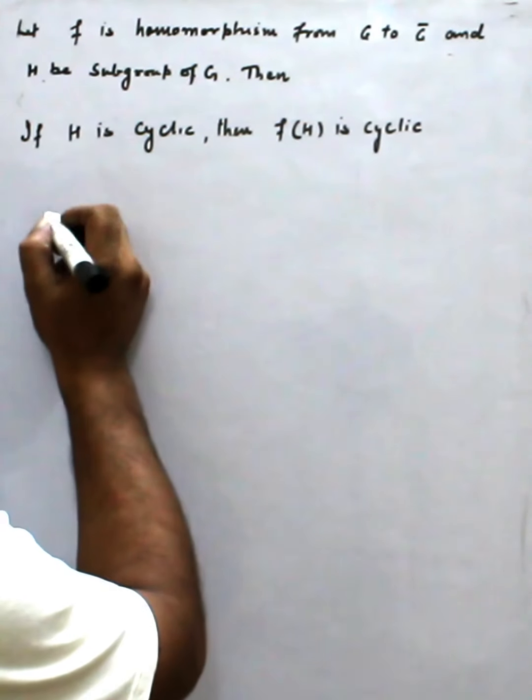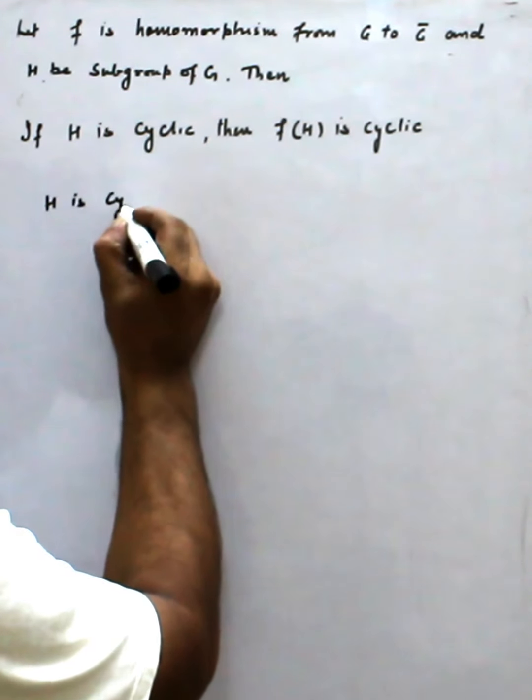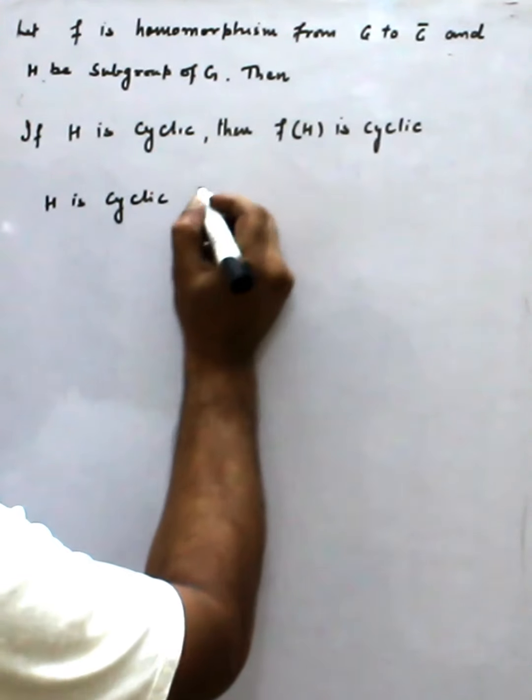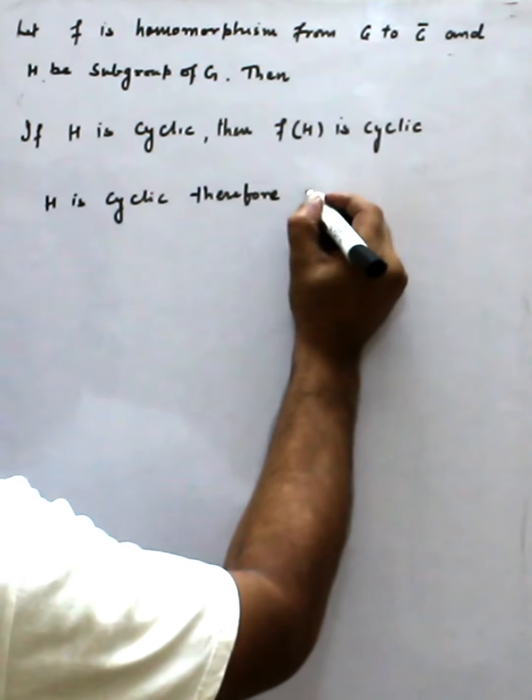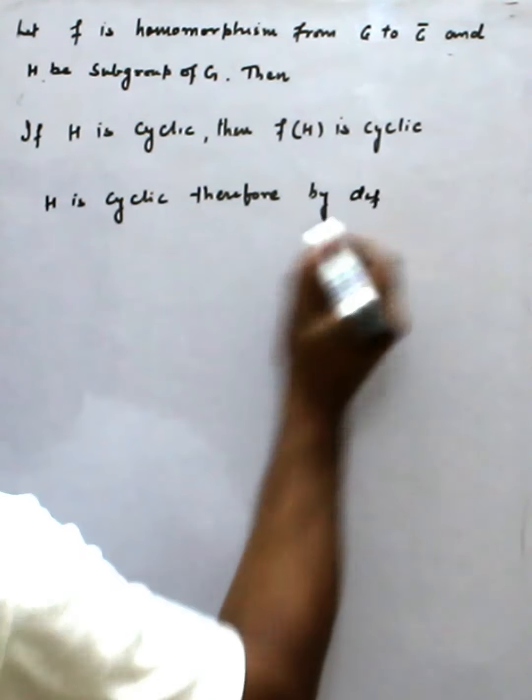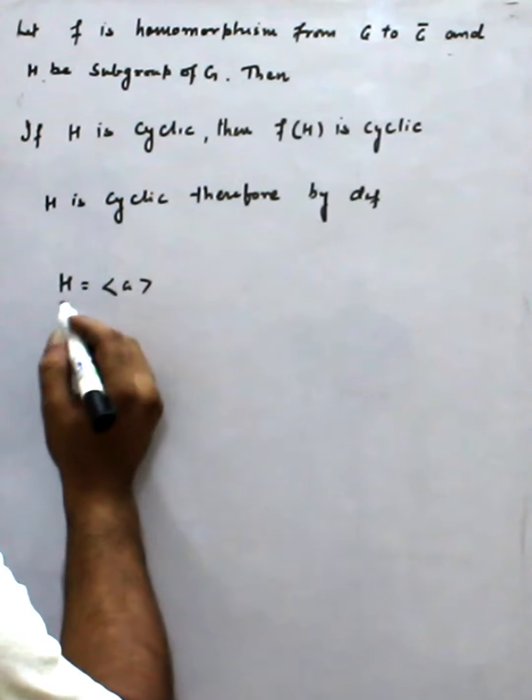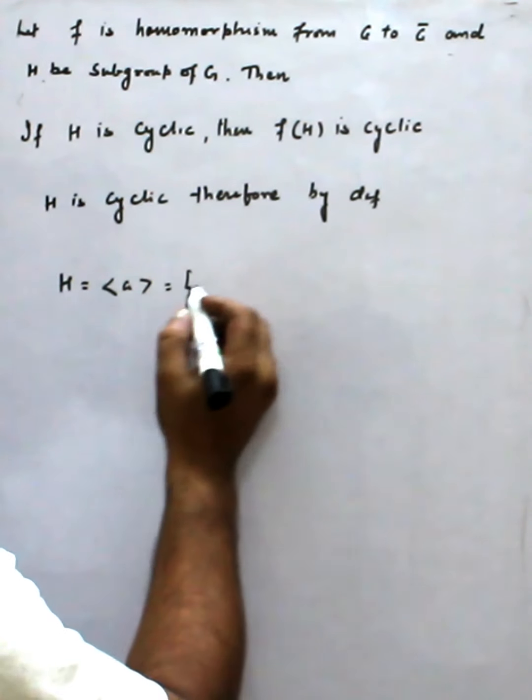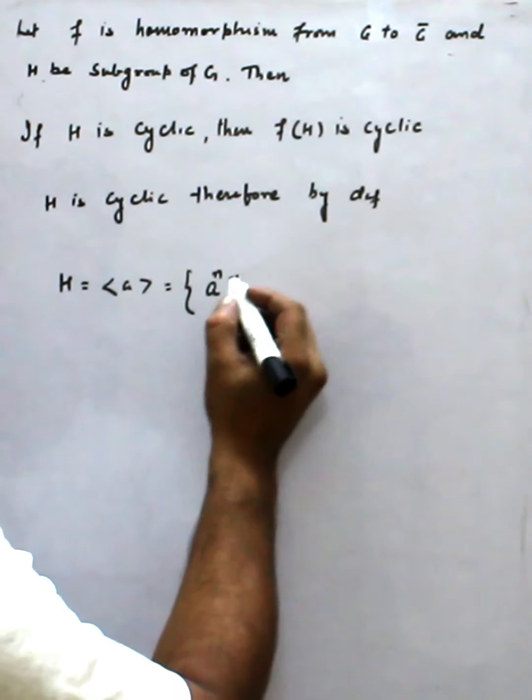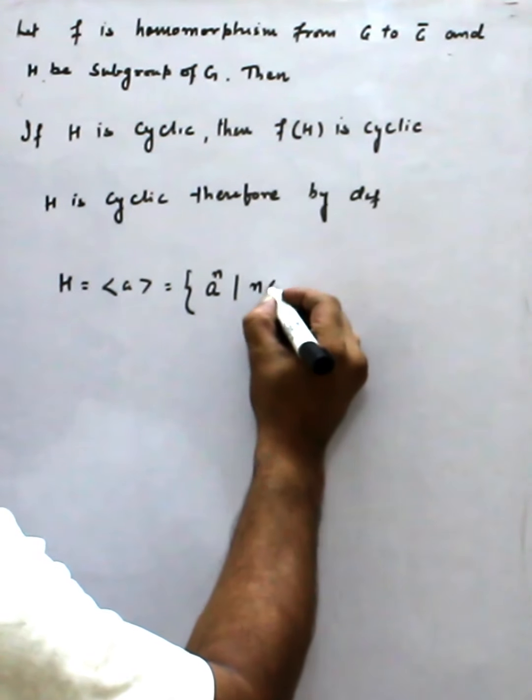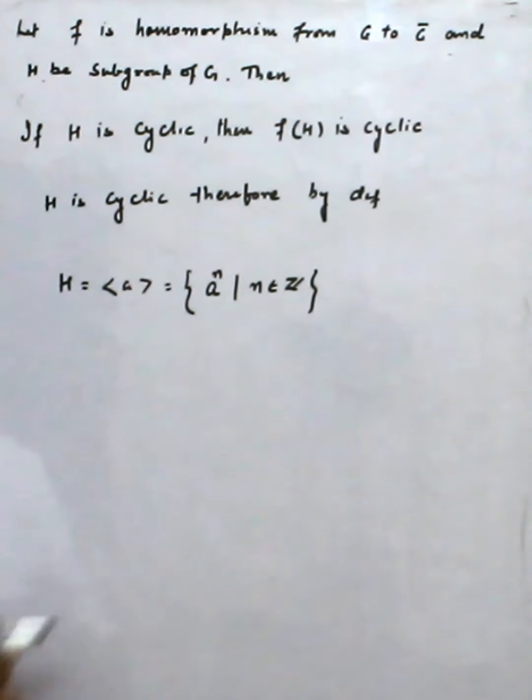By definition of cyclic, H is cyclic. Therefore, by definition there is some generator a of H. That means the elements of H are a raised to n and n belong to Z, where Z is the set of integers. Now we show F(H) is cyclic.